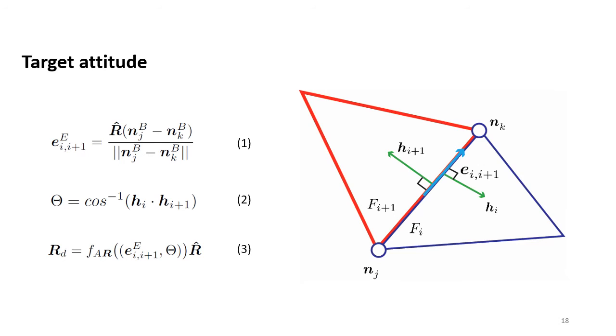As a result, the rotation can be represented with an axis-angle pair. The axis is the vector pointing from Nj to Nk, whereas the angle can be computed from the inverse cosine of the dot product of hi and hi+1, which are vectors on Fi and Fi+1 respectively, that are orthogonal to the common edge. Afterwards, we can compute the target attitude by rotating the current estimated attitude with the desired rotation we just computed.